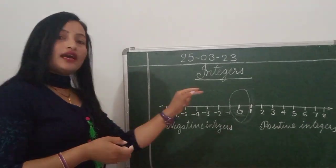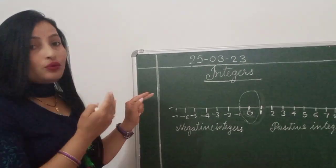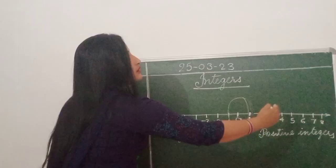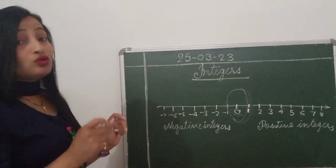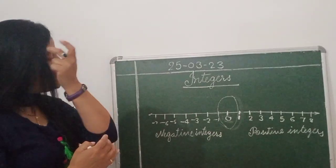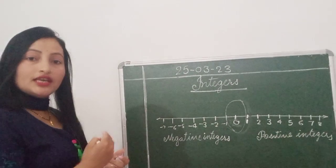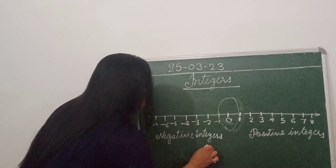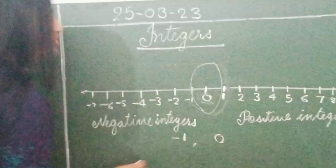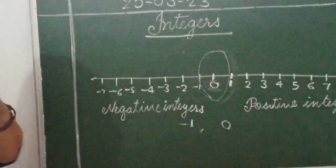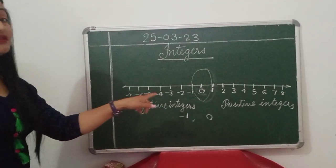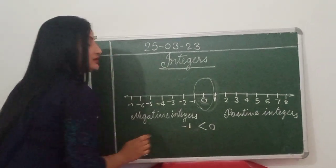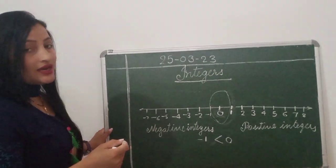एक बात और आपको समझना है. जब आप left की तरफ बढ़ेंगे तो value decrease होती जाएगी — less होती जाएगी. And as you move right, the value increases. Suppose someone asks: which is bigger — minus 1 or 0? Then 0 is bigger than minus 1.